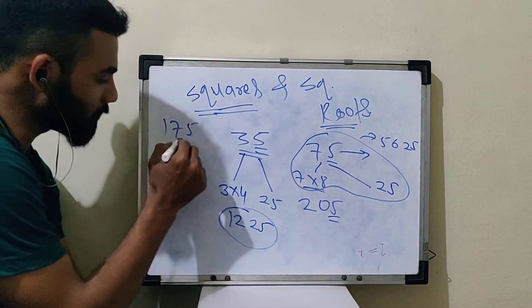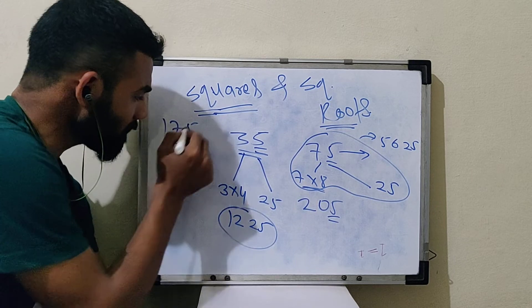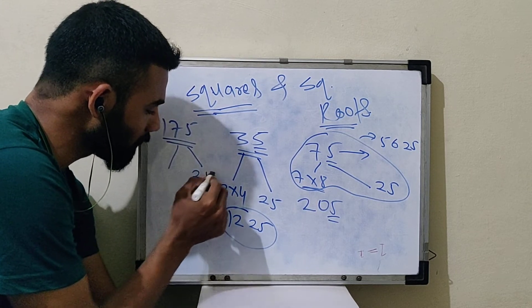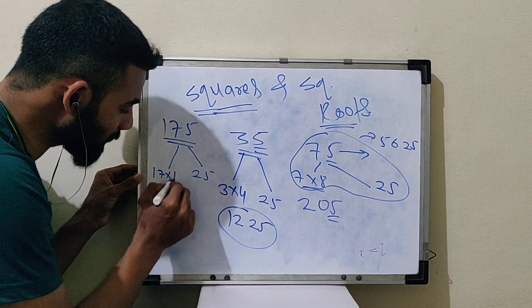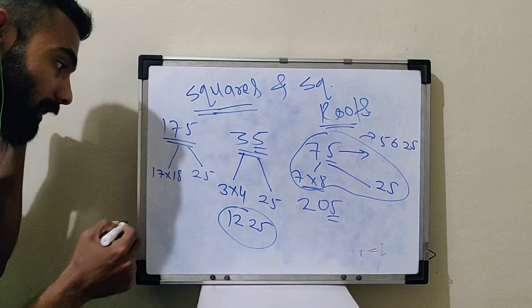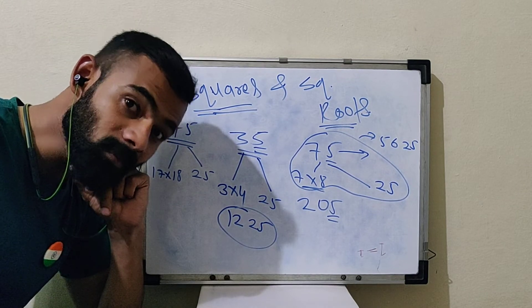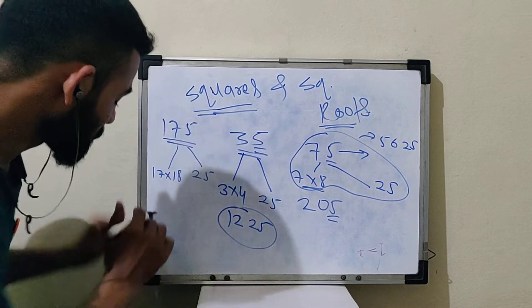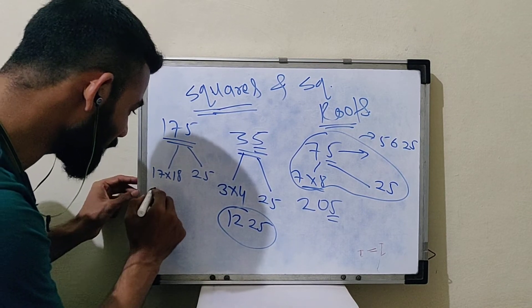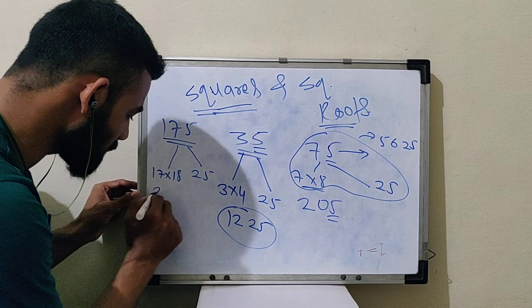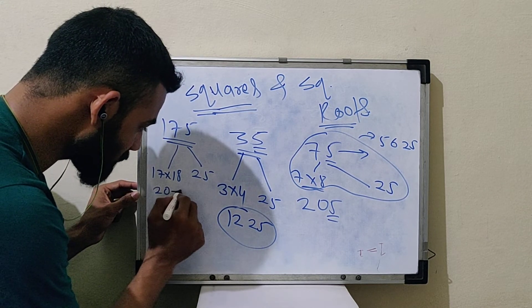In this case, 175. How do we do this square? This is for example, here we have 25. What do we do here? 17 multiplied by 18. 17 multiplied by 18.